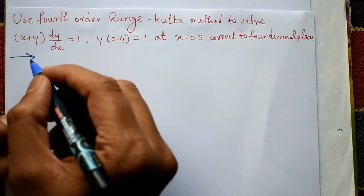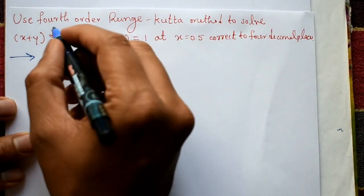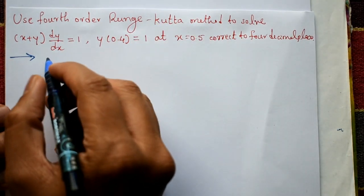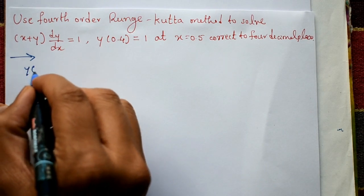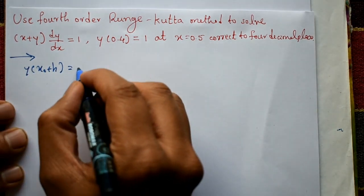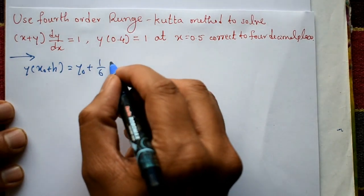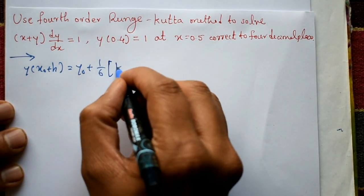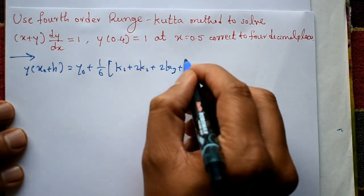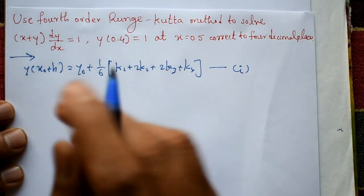This is a straightforward example. The 4th order RK formula is: y(x₀ + h) = y₀ + (1/6)(k1 + 2k2 + 2k3 + k4). Call this equation number 1.